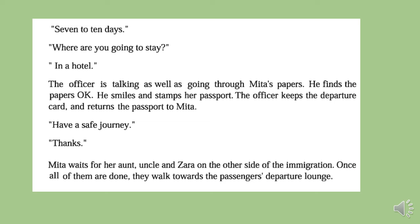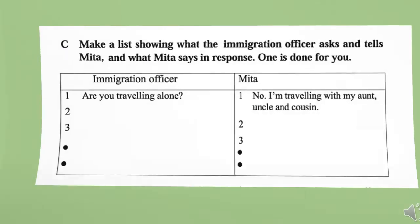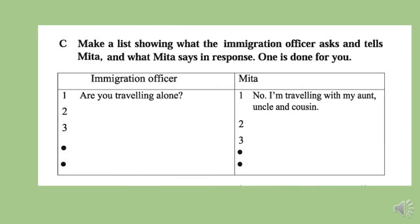Once all of them are done, they walk towards the passengers' departure lounge. This is a conversation between the immigration officer and Mita. Now there is an exercise for you: make a list showing what the immigration officer asks and tells Mita, and what Mita says in response. One is done for you.